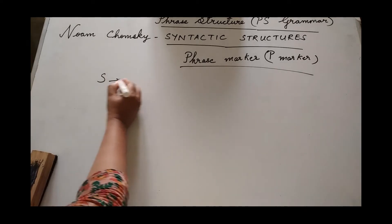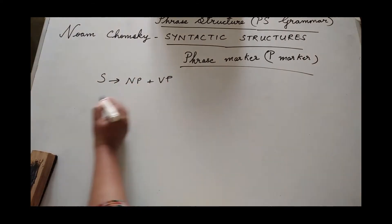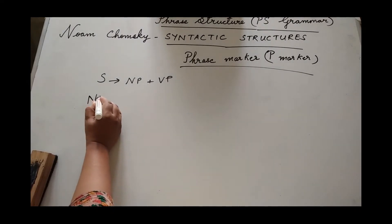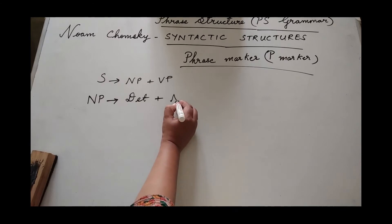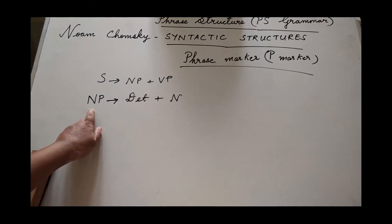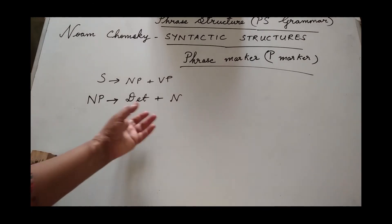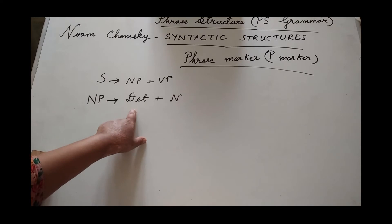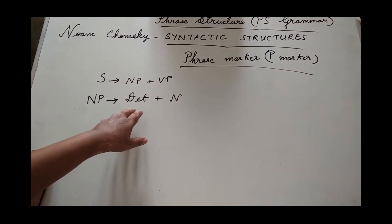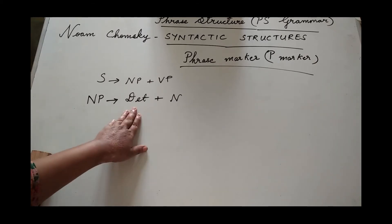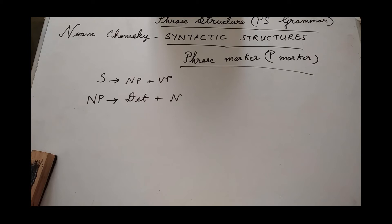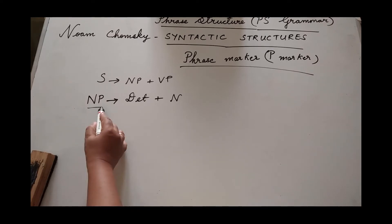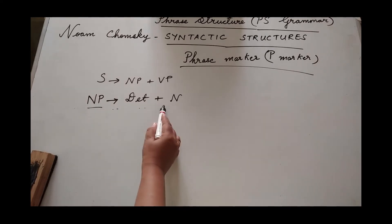In order to learn how to do the phrase marker of a given sentence, you should learn the basic rewrite rules. The first one is S is equal to NP plus VP. Then, can we split a noun phrase further? Yes. A noun phrase can be split further — a noun phrase is constituted by the combination of a determiner and a noun. For example, 'my book': my is a determiner and book is a noun. Or 'the man': the is a determiner and man is a noun. So the rewrite rule is: noun phrase equals determiner plus noun.